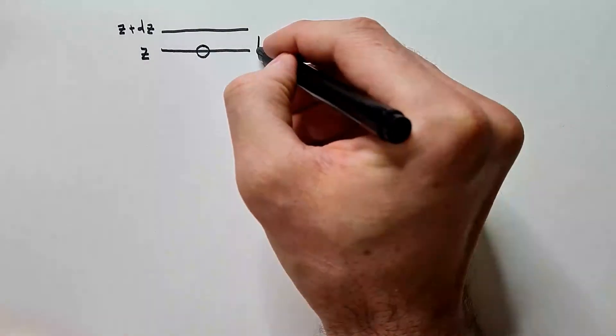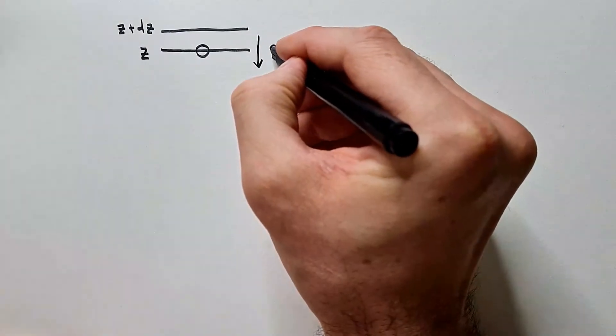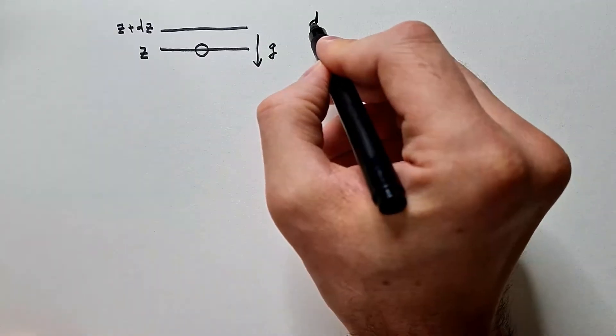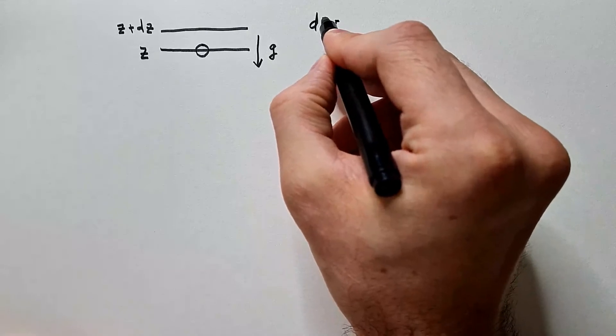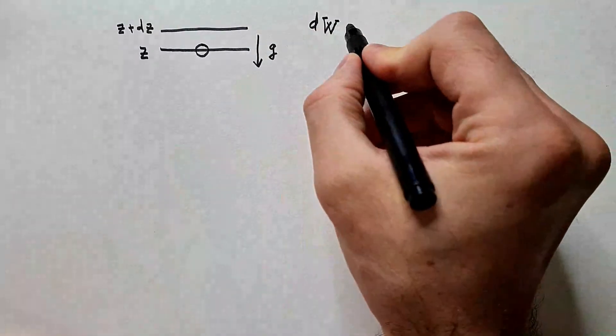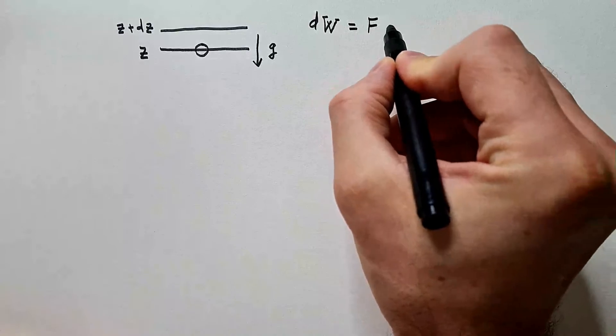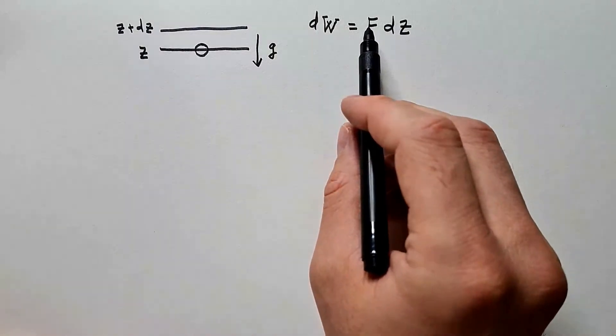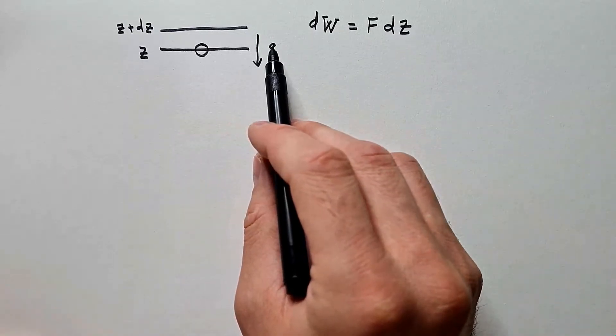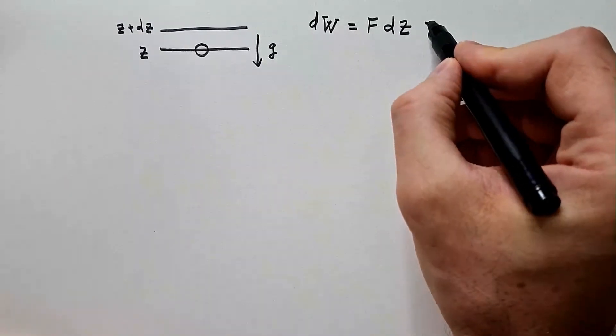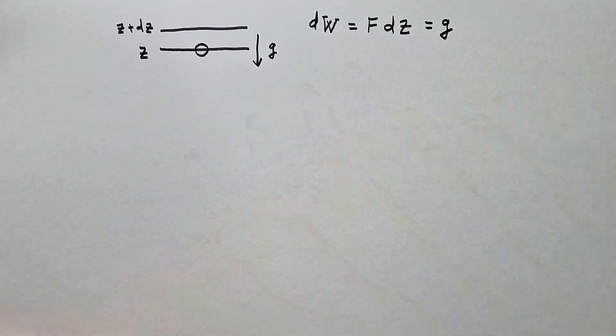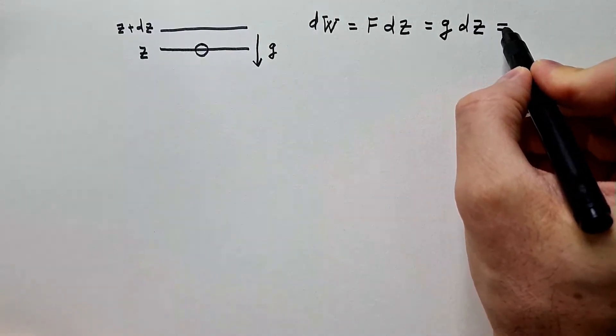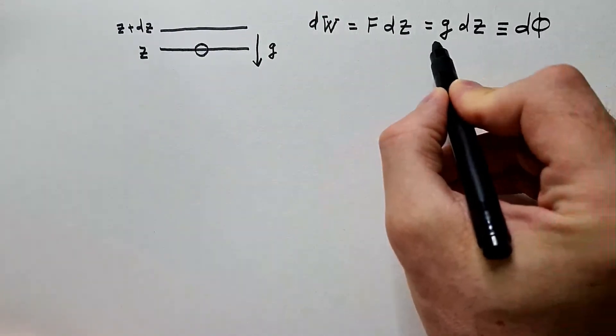While we are doing that, we are battling gravity that is acting down. So, what is work? Well, work, dw, that's usually symbol for work, we know is force times distance. But what is force? Because this is unit mass, force is just g. It would be gm, but mass is unit. And then distance is dz, and this is, by definition, df.